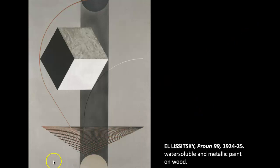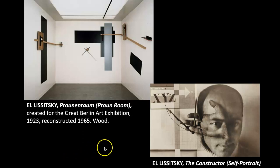Now let's look at El Lissitzky as he creates installation art. This is called 'Proun im Raum,' or 'Proun Room,' created in Berlin, Germany, for the Great Berlin Art Exhibition in 1923. This is a reconstruction made in the 60s, primarily made of wood and paint. Unlike Malevich, Lissitzky traveled, bringing to Germany the new Russian avant-garde styles of both Suprematism and — the next movement we'll meet — Constructivism.